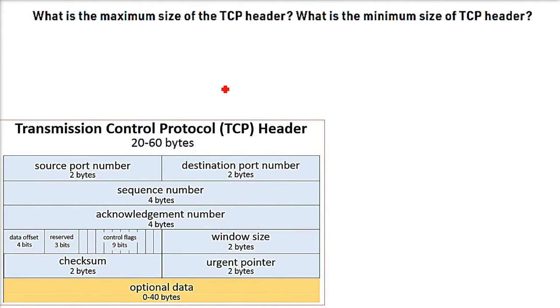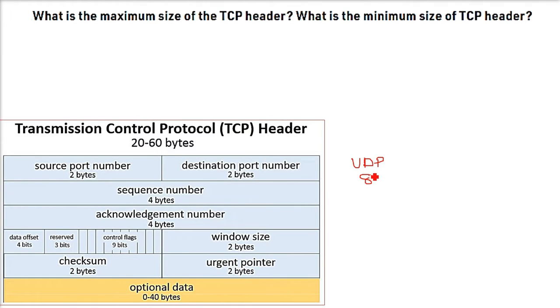What is the maximum size of the TCP header? What is the minimum size of the TCP header? Now let me tell you about UDP first. UDP has a fixed header size of 8 bytes.